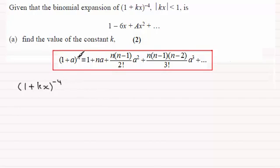Well, n is clearly the -4 and a is all of kx. So what this is going to be identical to then is 1 plus n times a, so it's going to be plus n which is -4 and a is the kx.